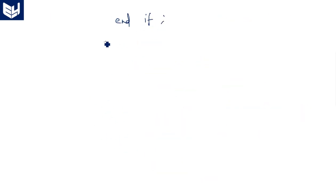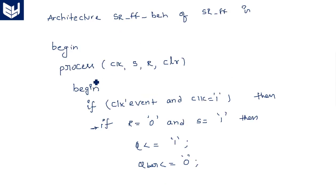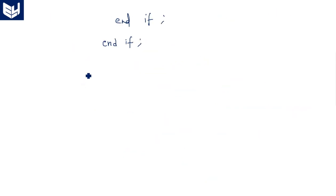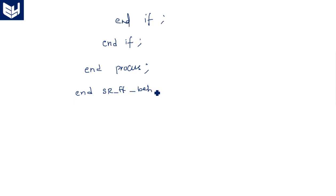Now close all the opened blocks: how many ifs we opened — end if, end if. Whatever process we opened — end process. And end architecture. The architecture name is SR_flip_flop_behavioral. That is how we write the VHDL code for the SR flip-flop in behavioral style.